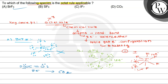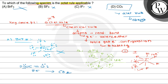So among the given options, options A, B, and C do not obey the octet rule. The correct answer is option D, CO2, which obeys the octet rule. Hope you understood well. Best of luck, thank you so much.